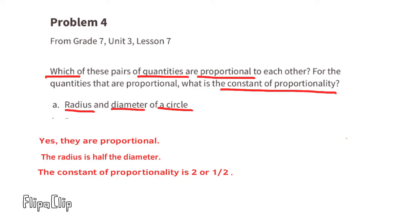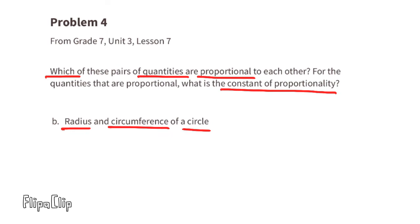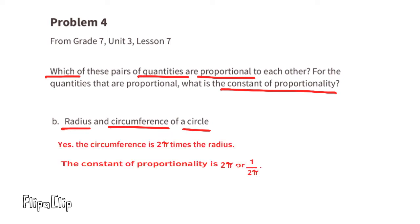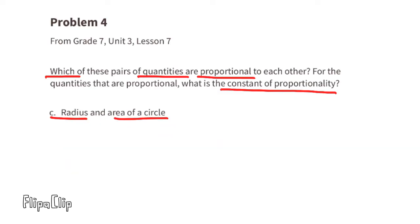Part B: radius and circumference of a circle — yes. The circumference is 2 pi times the radius, so the constant of proportionality is 2 pi or 1 over 2 pi. Part C: radius and area of a circle — no, they are not proportional. When graphed, it would not form a straight line, so there is no constant of proportionality.